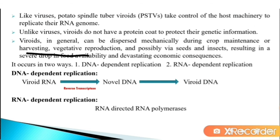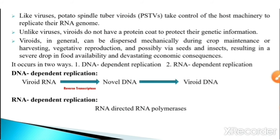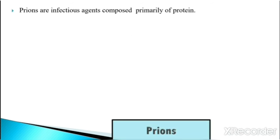Viroids can be dispersed mechanically during crop maintenance, harvesting, vegetative reproduction, and possibly via seeds and insects, resulting in a severe drop in food availability and devastating economic consequences. Viroid replication occurs in two ways: DNA-dependent replication, where viroid RNA is converted into DNA via reverse transcriptase and then replicated, and RNA-dependent replication, which depends on RNA-directed RNA polymerases.